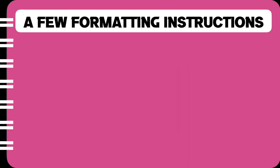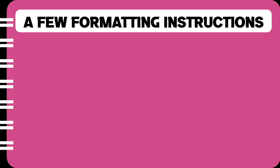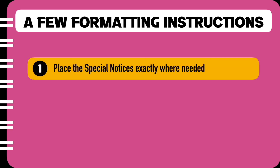Before I come to the end of this video, I am going to talk about a few formatting instructions we need to follow while writing special notices. The first is that we need to place the special notices exactly where needed. For example, if you are learning how to ride a bike and you already singe your legs on the hot silencer, there is no point telling you to stay away from it at the end of the instructions in do's and don'ts. The special notices need to be placed exactly where they are beneficial to the reader.